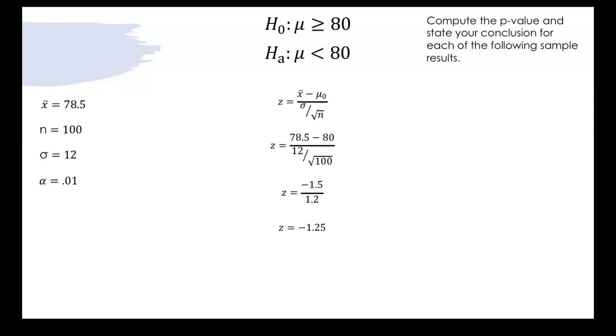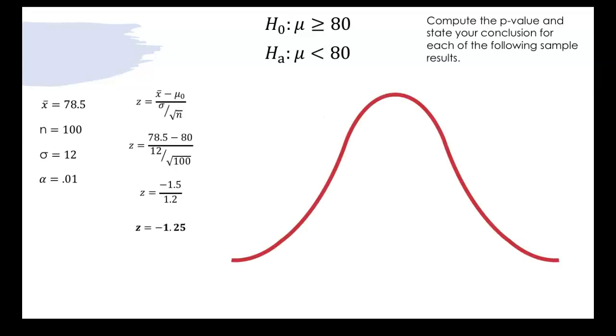So we'll use this z-score this test statistic in order to find our p-value. So we have our bell curve and we put our z-score of negative 1.25 on our bell curve.